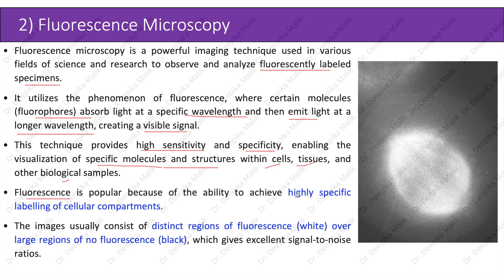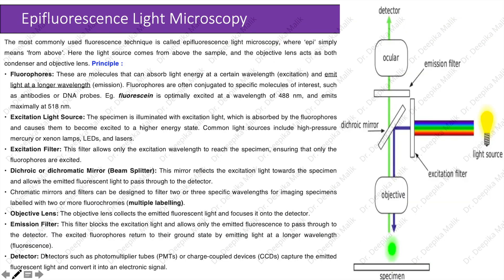Fluorescence microscopy enables the visualization of specific molecules and structures within cells, tissues, and other biological samples. It is popular because of the ability to achieve highly specific labeling of cellular compartments. The images usually consist of distinct regions of fluorescence (white) over large regions of no fluorescence (black), which gives excellent signal-to-noise ratios.